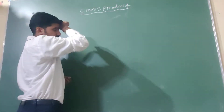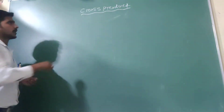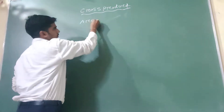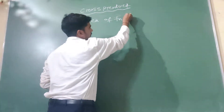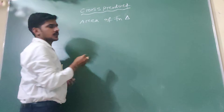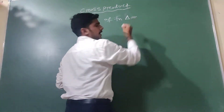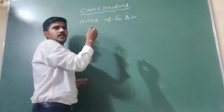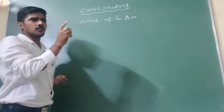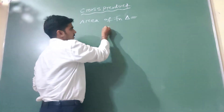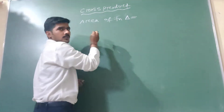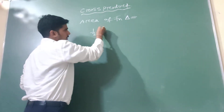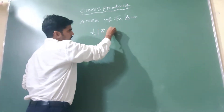Now we will discuss how to calculate the area of a triangle. You know the formula is half into base and height. Suppose we have a triangle where A vector and B vector are given. The area of the triangle is half into the magnitude of A vector cross B vector.